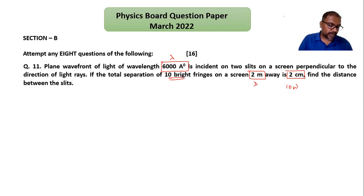Here's the solution. Given lambda is 6000 Angstrom, so we have to write in meters. We can write 6000 into 10 to the minus 10 meters, or you can write 6 into 10 to the minus 7 meters by shifting the decimal point. Then capital D is 2 meters.